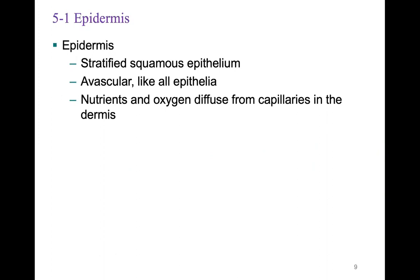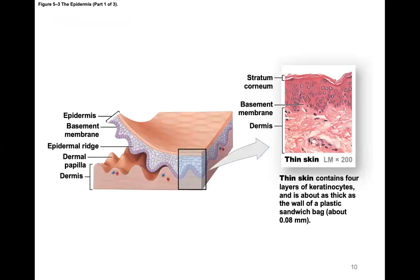A key feature of epithelial tissue is that it is avascular, meaning it does not have blood supply. Any nutrients and oxygen required will diffuse from the capillaries in the dermis to the epidermis. As you look toward the more exterior layers of the epidermis, those cells are no longer living — they no longer resemble cells and are essentially membranous sacs filled with a protein called keratin.